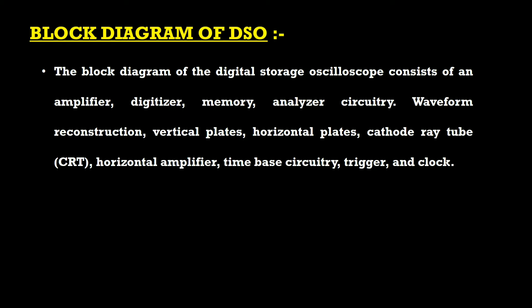Now let us look at the block diagram of the DSO. The block diagram consists of many blocks: amplifier, digitizer, memory, analyzer circuitry, waveform reconstruction, vertical plates, horizontal plates, cathode ray tube (CRT), horizontal amplifier, time-base circuitry, trigger, and clock.